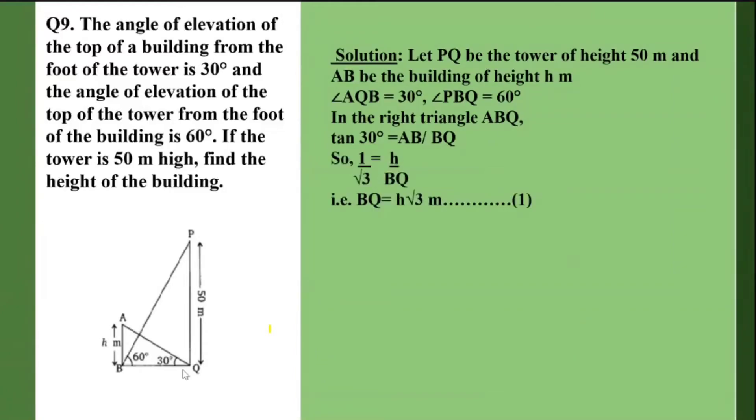So I get 1 upon root 3 equals h upon BQ. That gives me BQ equals h root 3 meters. This is the first equation that I'll be using. Now I take up the second triangle,